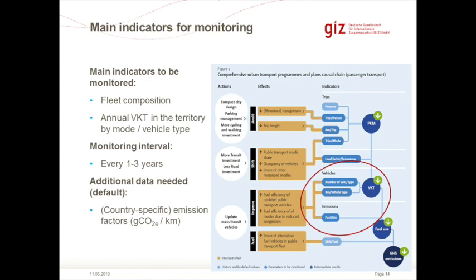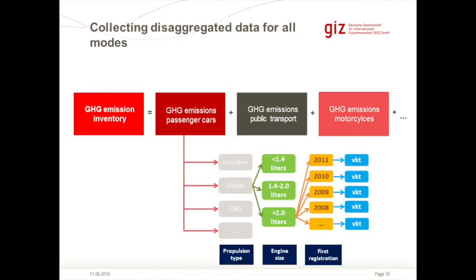This approach can be implemented at different levels of detail. For passenger cars, we can break them down into different fuel types — gasoline, diesel, gas-fueled, or electric vehicles — and further by engine size and vehicle age. For each of those, we make an estimate of vehicle kilometers traveled. If detailed data is available, we can also break down emission factors into more detailed categories. If data is not available, we calculate with more average values for different vehicle types.